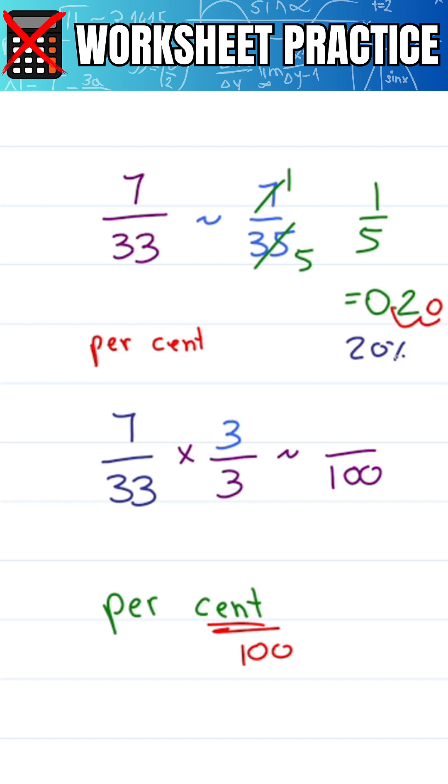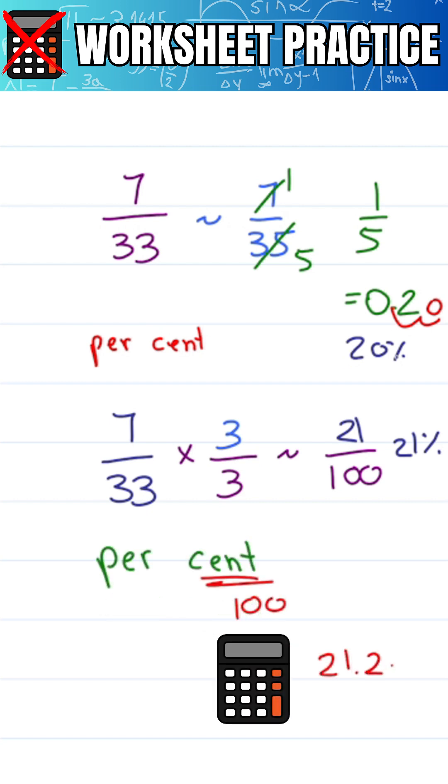So I multiply the top as well. 7 times 3 gives me 21, and 21 over 100 is 21 per 100 per cent, or 21%. Calculator says 21.2, which is close enough.